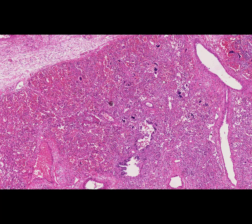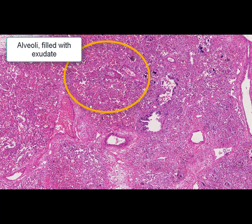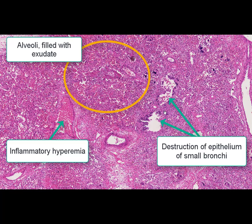At low magnification we can see considerable pathological changes in lung tissue. The alveoli are filled with exudate, as it usually happens at any pneumonia. Inflammatory hyperemia and destructive changes in the epithelial lining of bronchioles and small bronchioles are found.